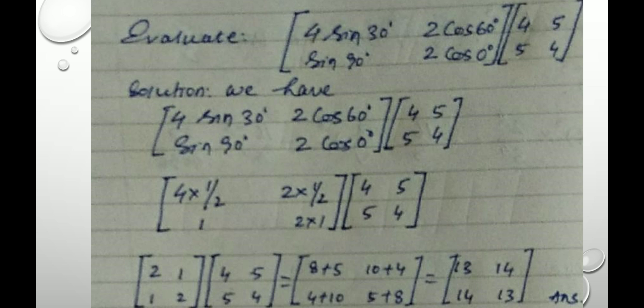The first question is like this. Evaluate 4 sin 30 degree, 2 cos 60 degree, sin 90 degree, 2 cos 0 degree to be multiplied with the second matrix that is 4, 5, 5, 4.